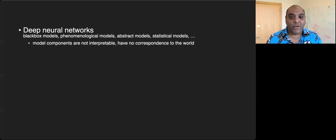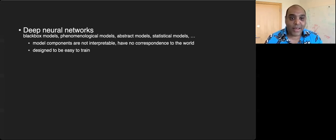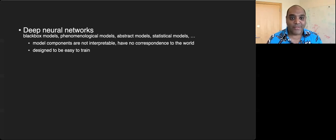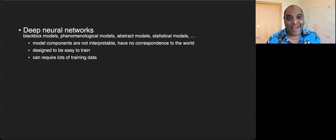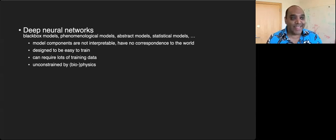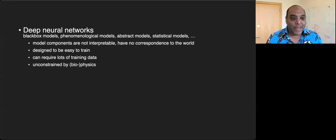The hidden units in a neural network have no correspondence to the world. They're designed to be easy to train and able to use lots of training data — often requiring it because they have millions, billions, even trillions of free parameters. They're unconstrained by anything to do with the real world, biology, or physics, except that you want some particular input-output function to be computed efficiently.